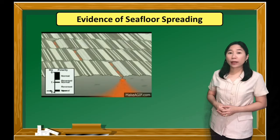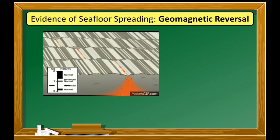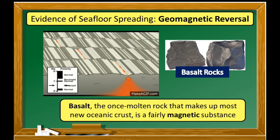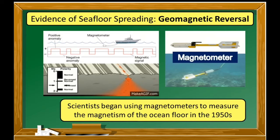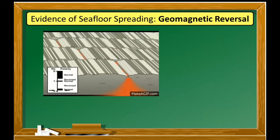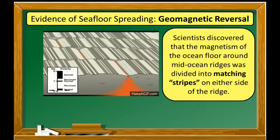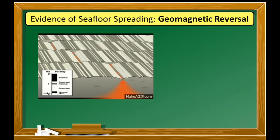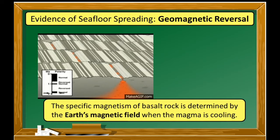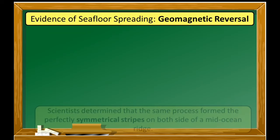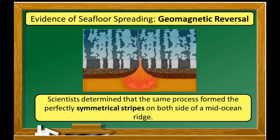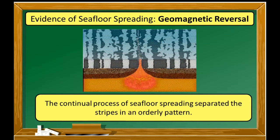Another strong evidence that supports seafloor spreading is geomagnetic reversal. Basalt, the molten rock that makes up most new oceanic crust, is a fairly magnetic substance. Scientists began using magnetometers to measure the magnetism of the ocean floor in the 1950s. They discovered that the magnetism of the ocean floor around mid-ocean ridges was divided into matching stripes on either side of the ridge. The specific magnetism of basalt rock is determined by the Earth's magnetic field when the magma is cooling. Scientists determined that the same process formed perfectly symmetrical stripes on both sides of a mid-ocean ridge.